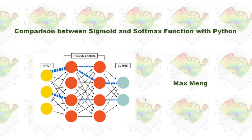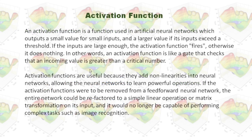This time, I'm going to compare sigmoid and softmax activation functions with Python. An activation function is a function used in artificial neural networks which outputs a small value for small inputs and a larger value if its inputs exceed a threshold. If the inputs are large enough, the activation function fires. Otherwise, it does nothing. In other words, the activation function is like a gate that checks that the incoming value is greater than a critical number.